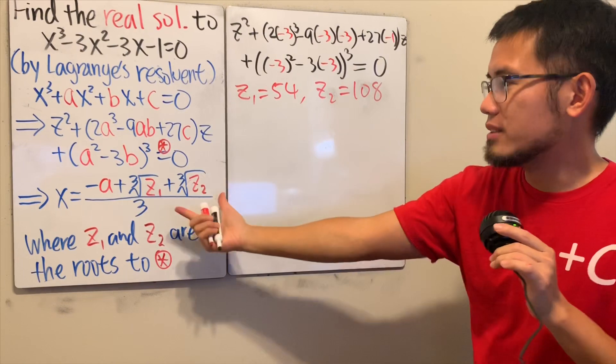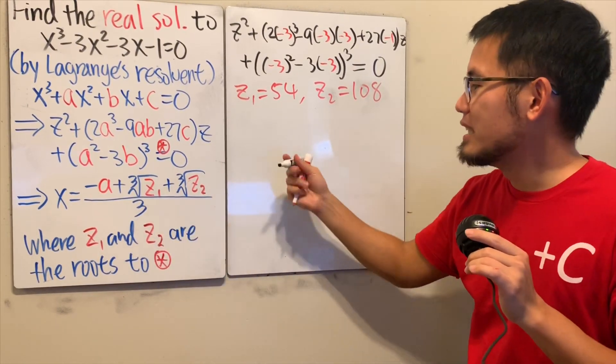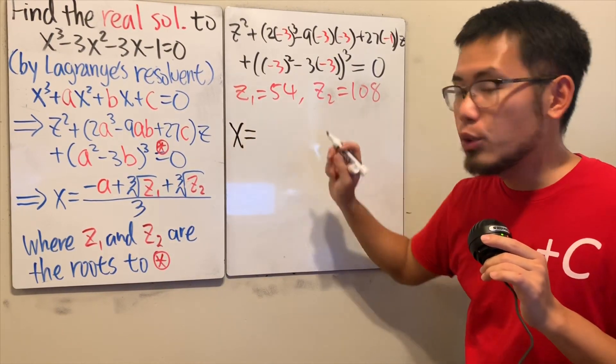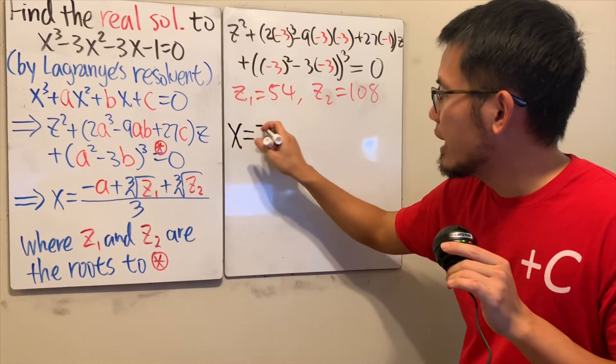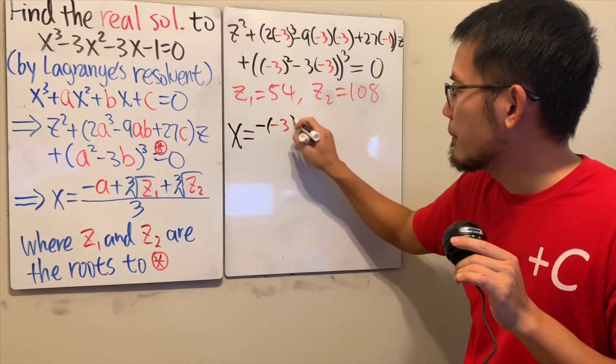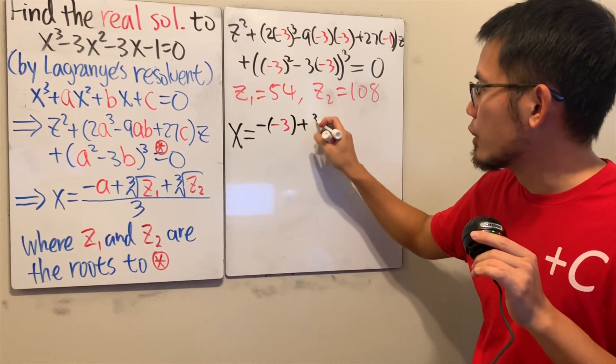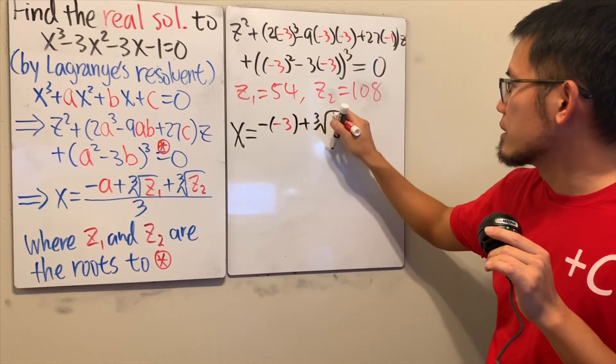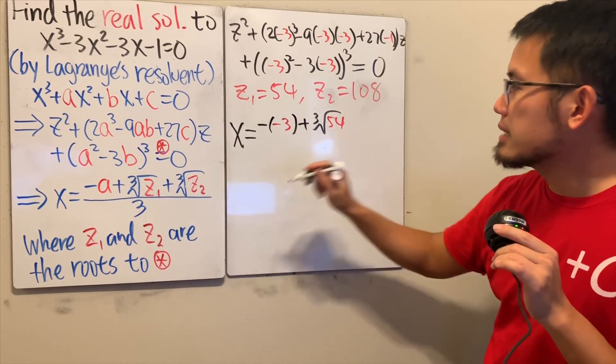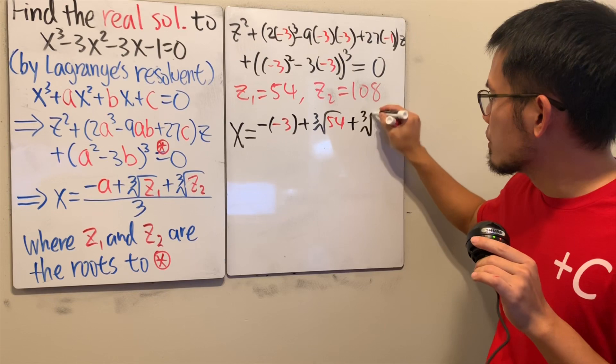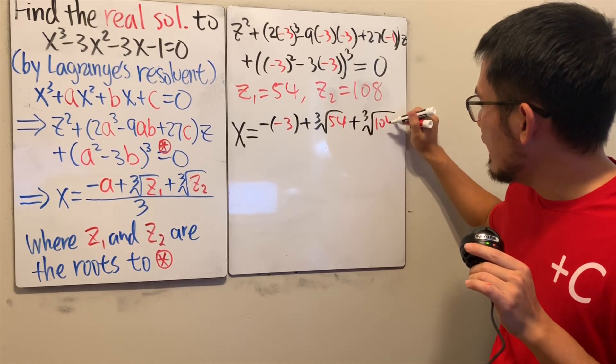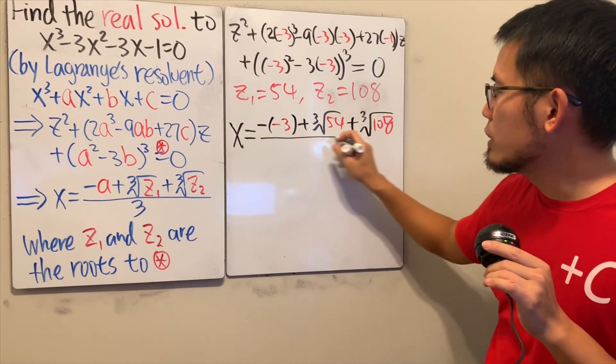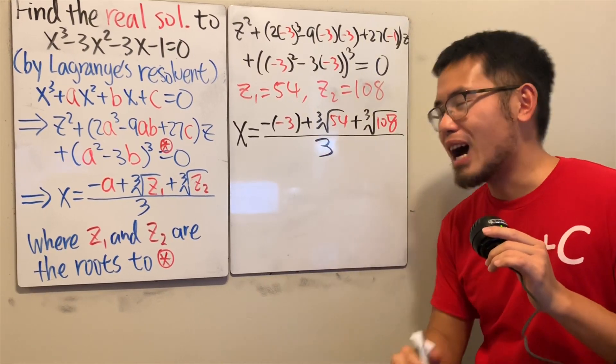You will see that x = -A, which is -3 right here. And then let me just add the cube root of Z₁. I'll put down that's 54. Lastly, we can add cube root of 108, and then all divided by 3.